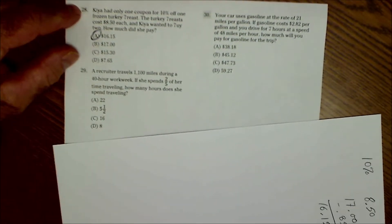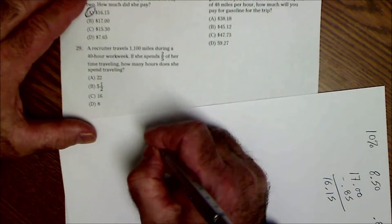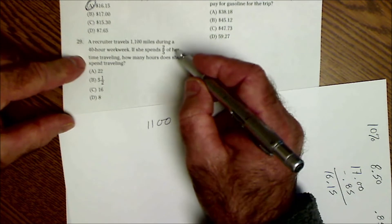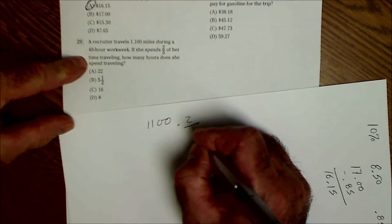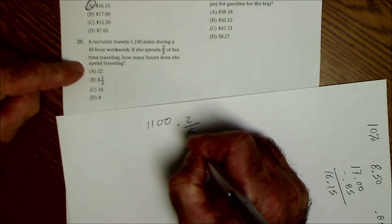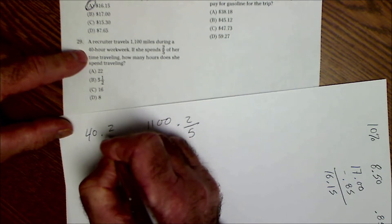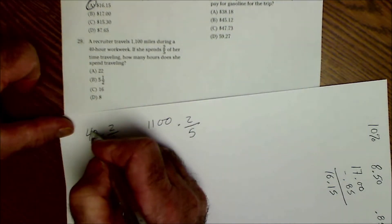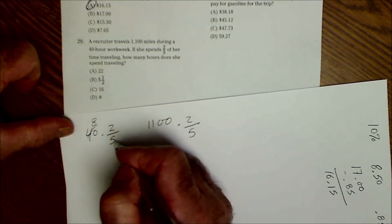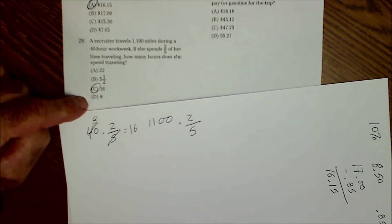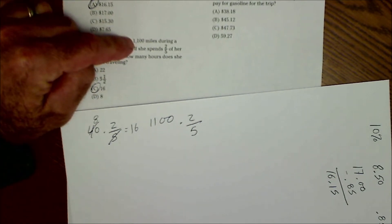Number 29. A recruiter travels 1,100 miles during a 40-hour work week. If she spends two-fifths of her time traveling, how many hours does she spend traveling? So you've got to figure that out. It's 40 times two-fifths. 5 goes in a 48 times. 5 goes in itself once to give you 16 hours. So 29 is C. That whole 1100 is really just a distractor.